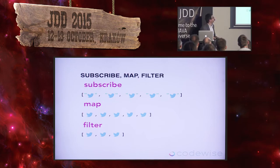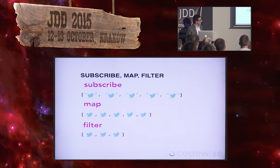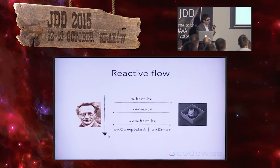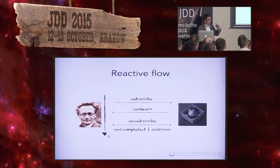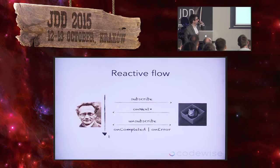Then we can filter it to remove some of the elements. We'll try to do this example in a moment — that will be exercise one. But let's first see what the contracts between producer and subscriber are to make sure we can consume and produce elements in the correct manner.